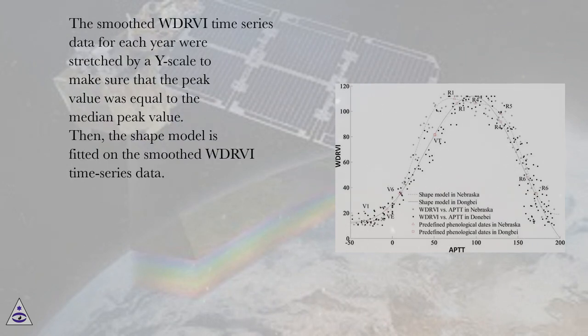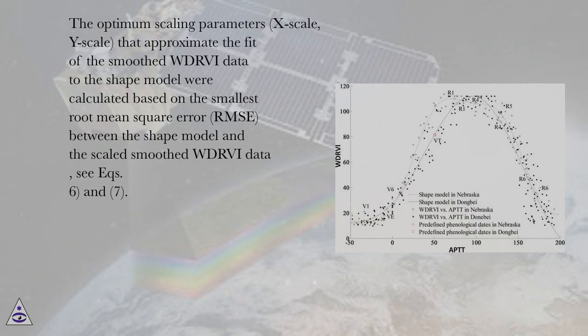The smooth WDRVI time series data for each year were stretched by a Y scale to make sure that the peak value was equal to the median peak value. Then, the shape model is fitted on the smooth WDRVI time series data. The optimum scaling parameters (X-scale, Y-scale) that approximate the fit of the smooth WDRVI data to the shape model were calculated based on the smallest root mean square error (RMSE).